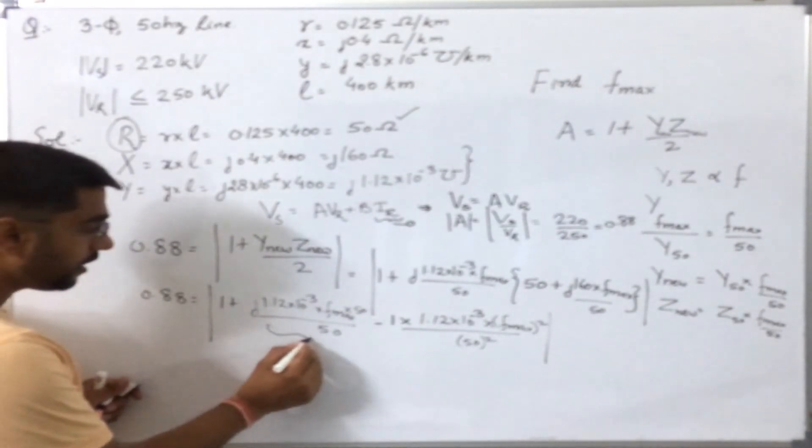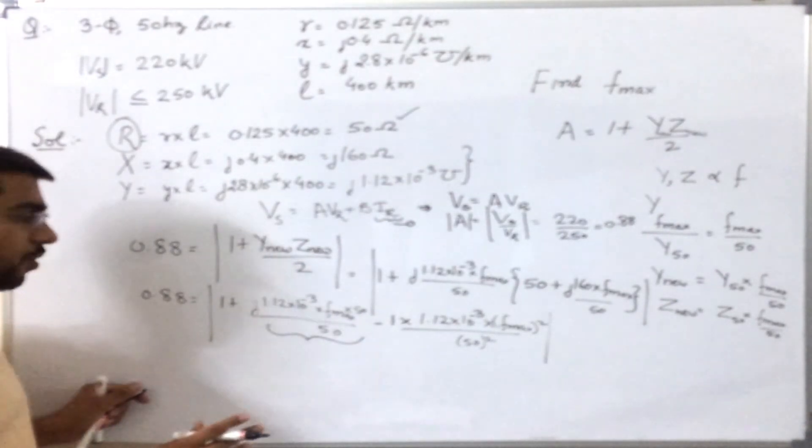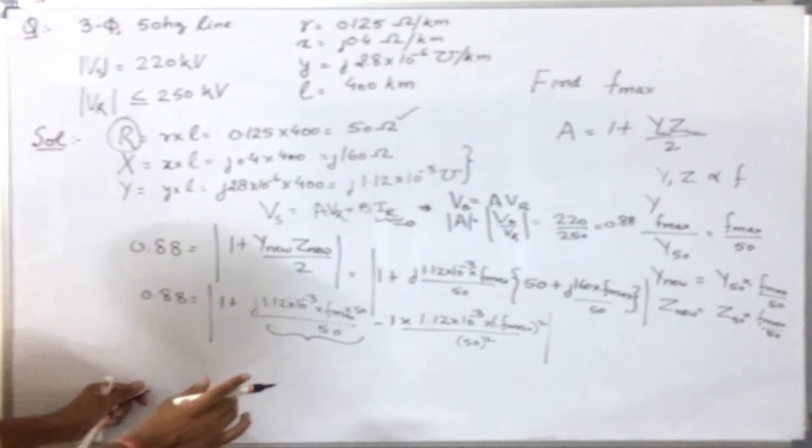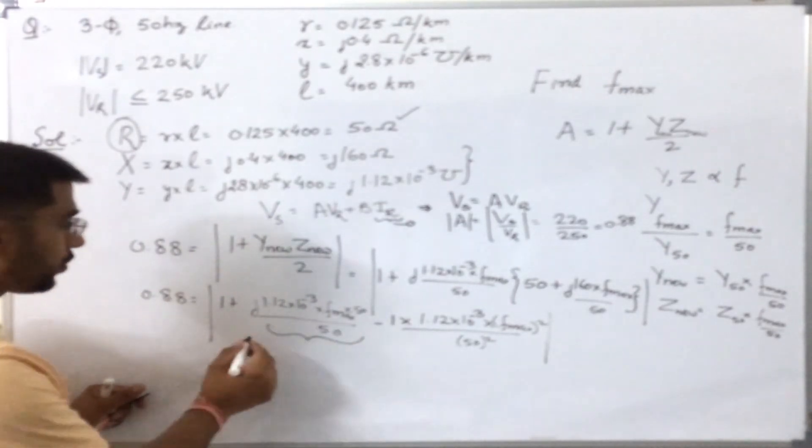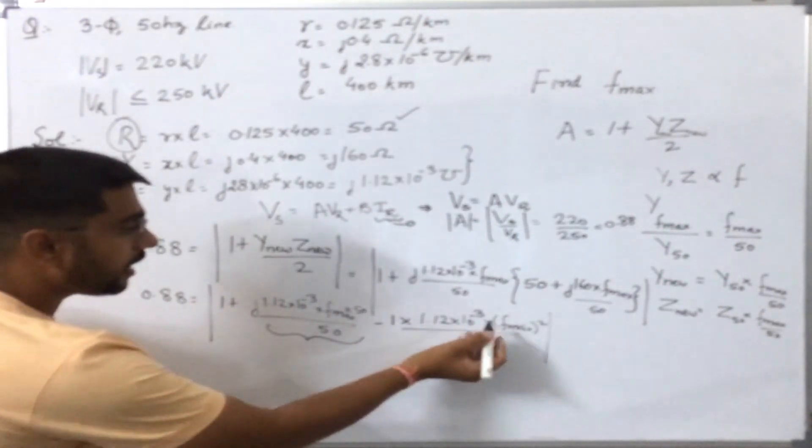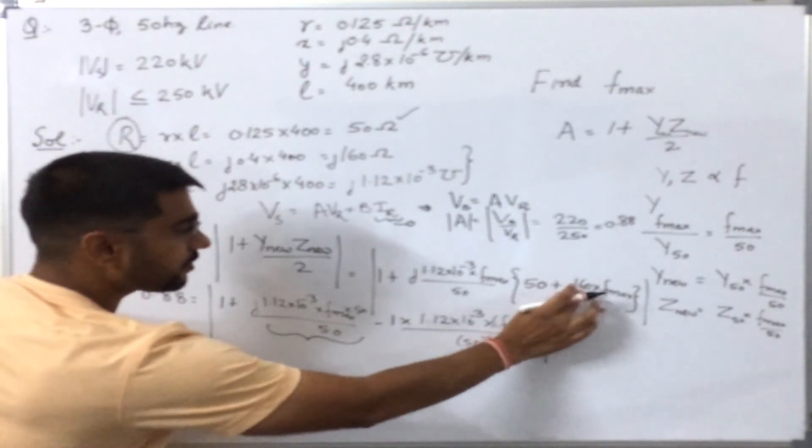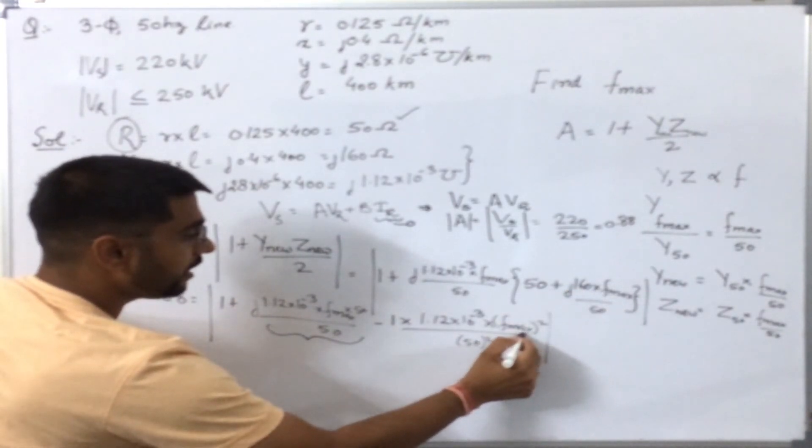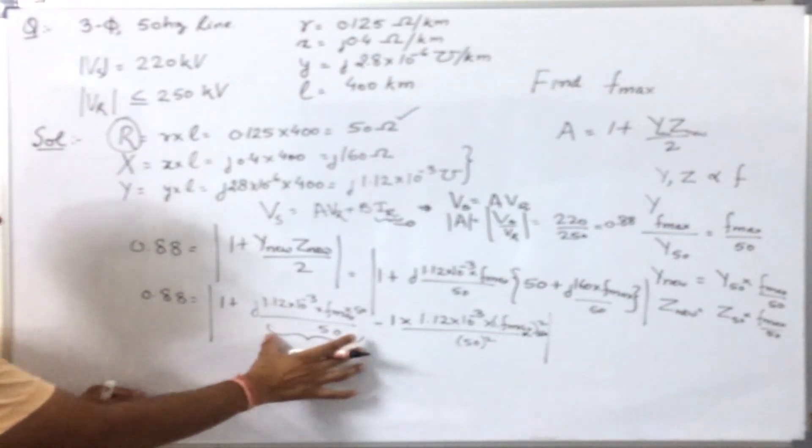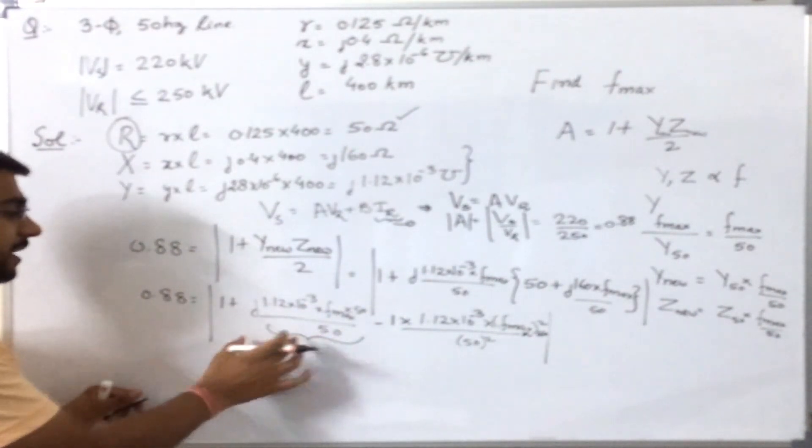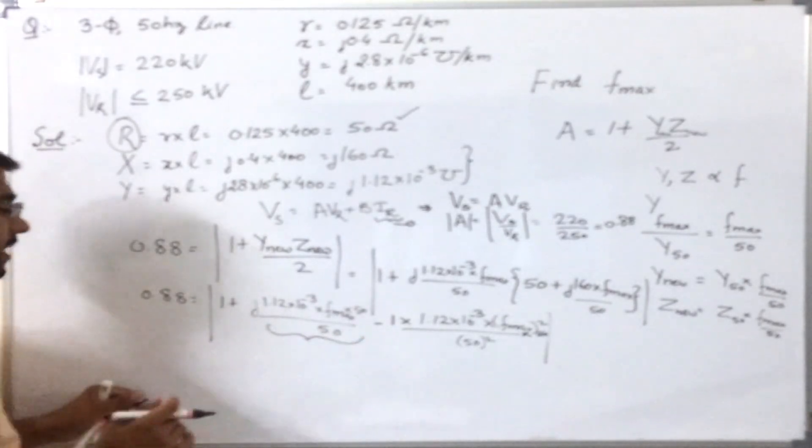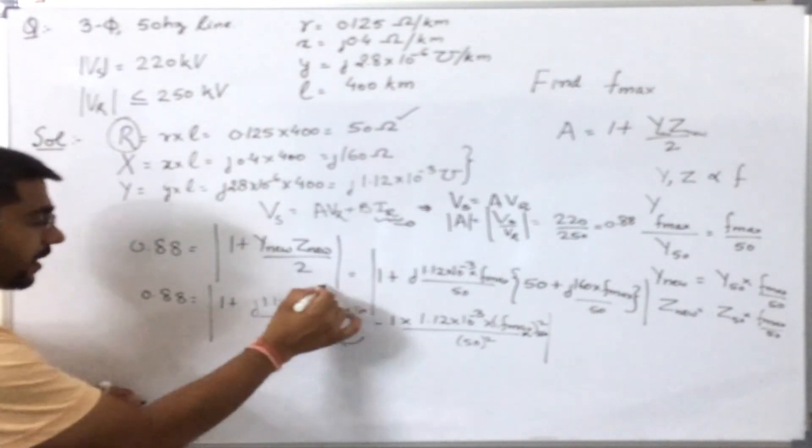Now, I can simplify it further by noting that this imaginary part is very small compared to the real part. I missed 160 here—this 160 should be in the multiplication also. So you see, this imaginary part is very small or negligible compared to the real parts. So I will neglect this part.